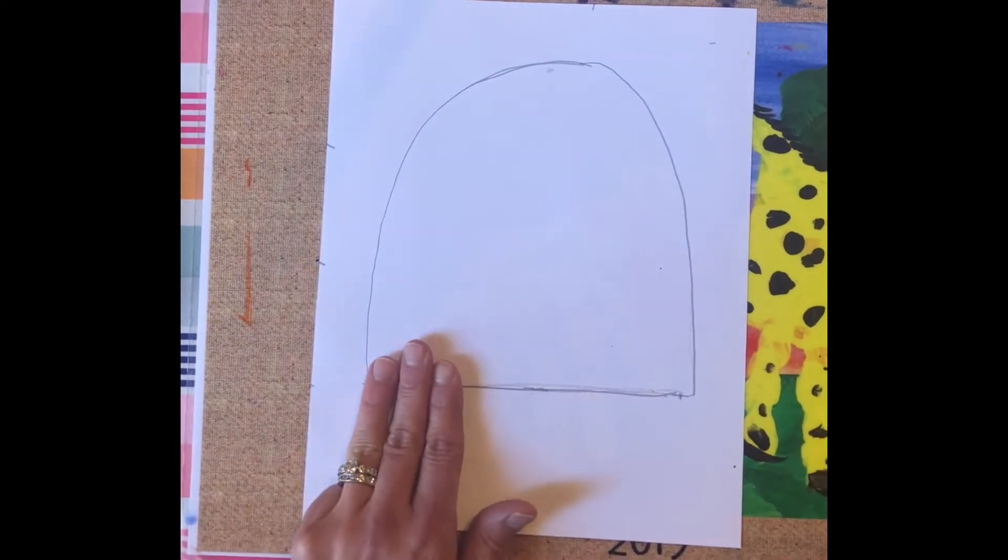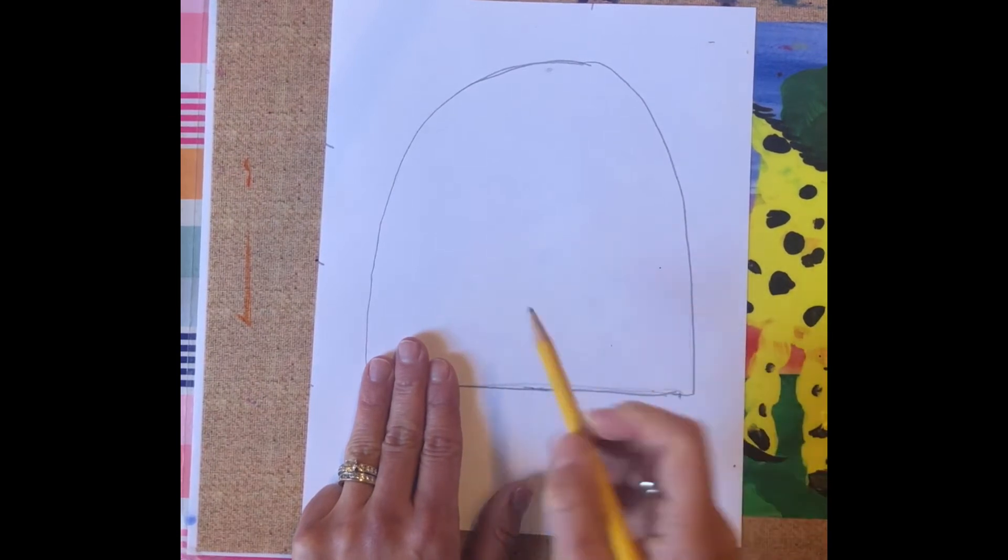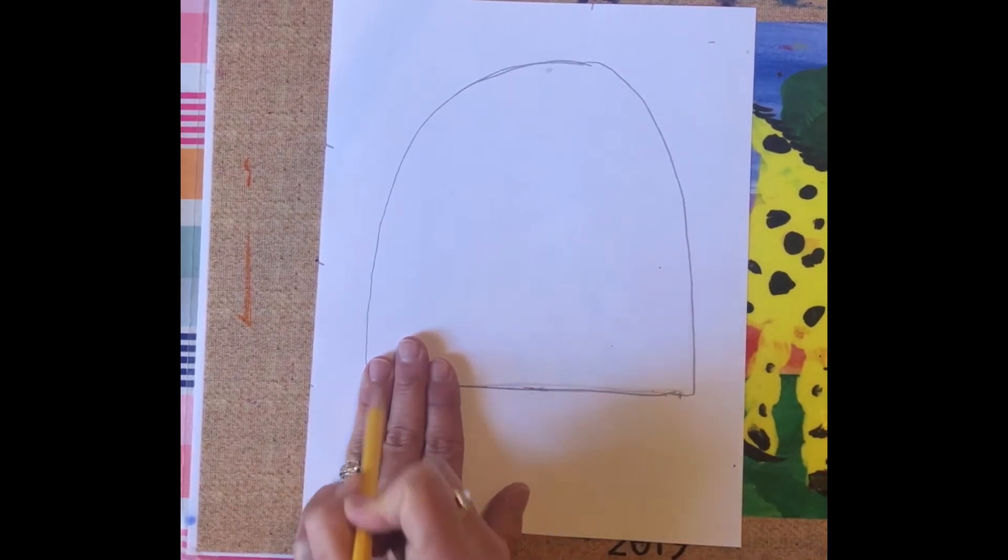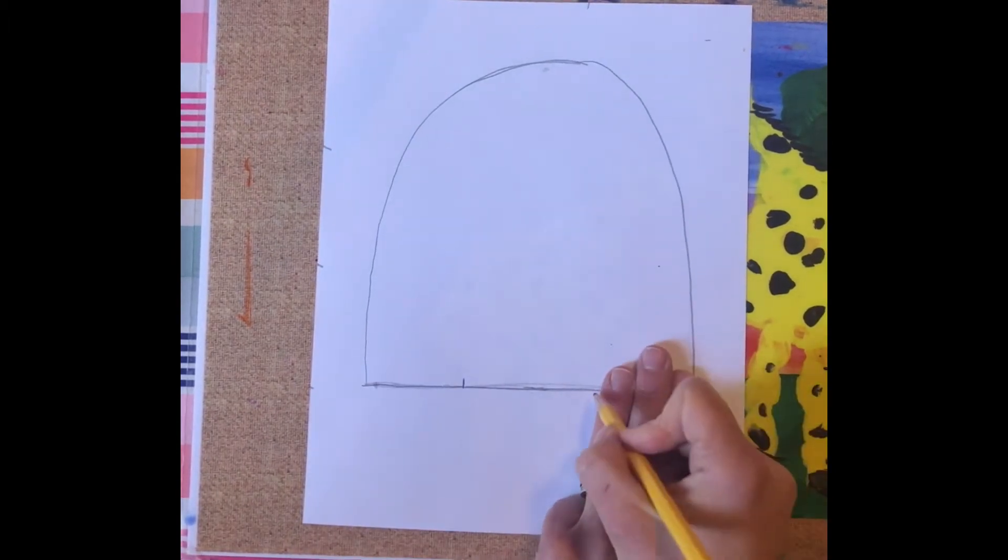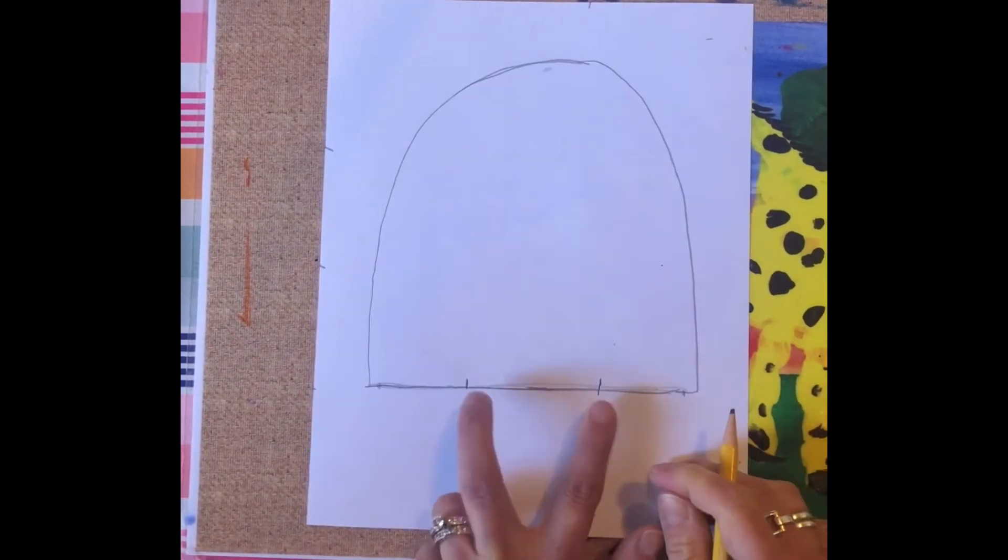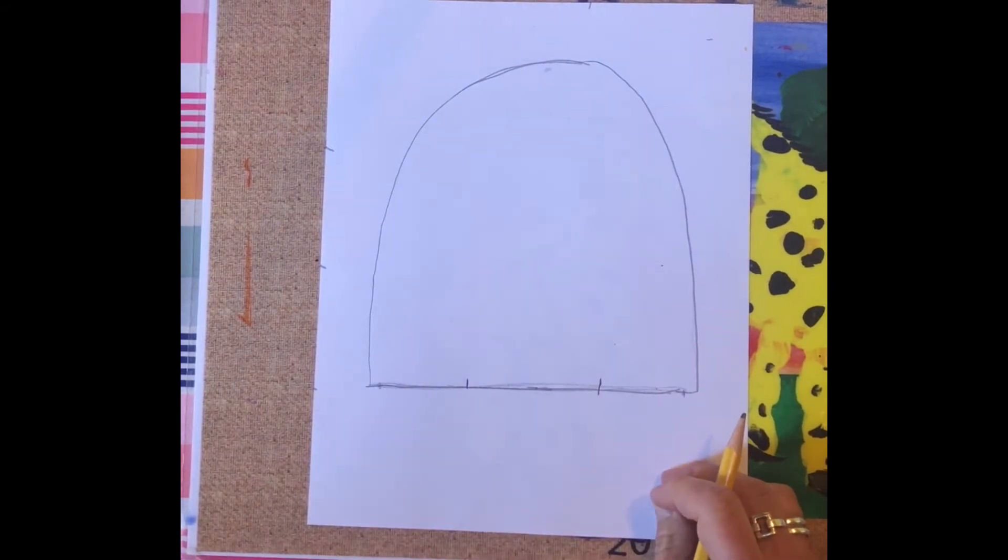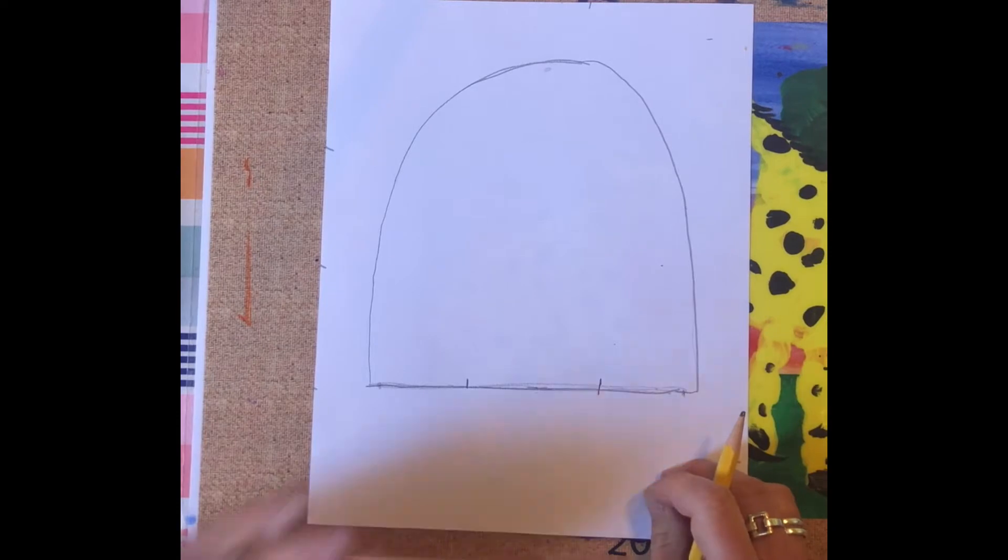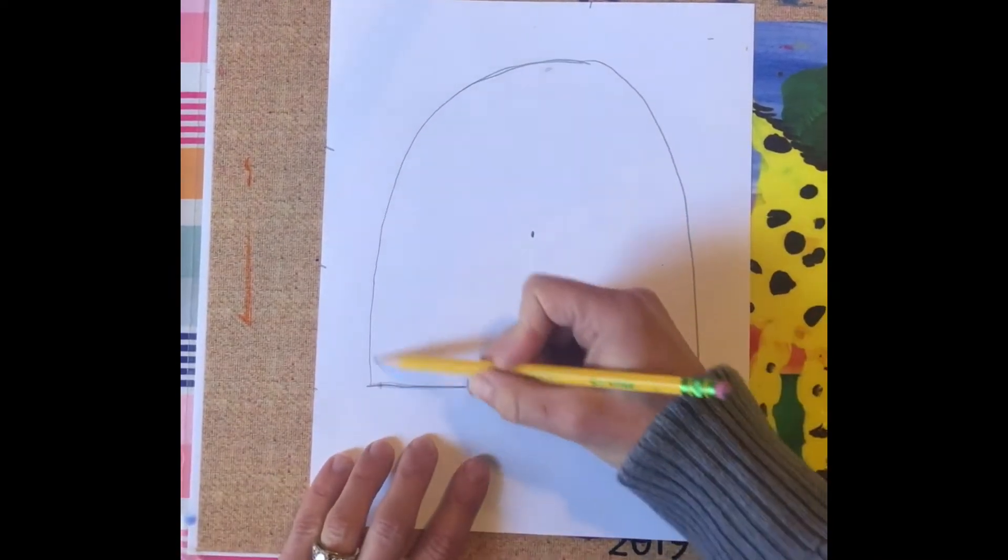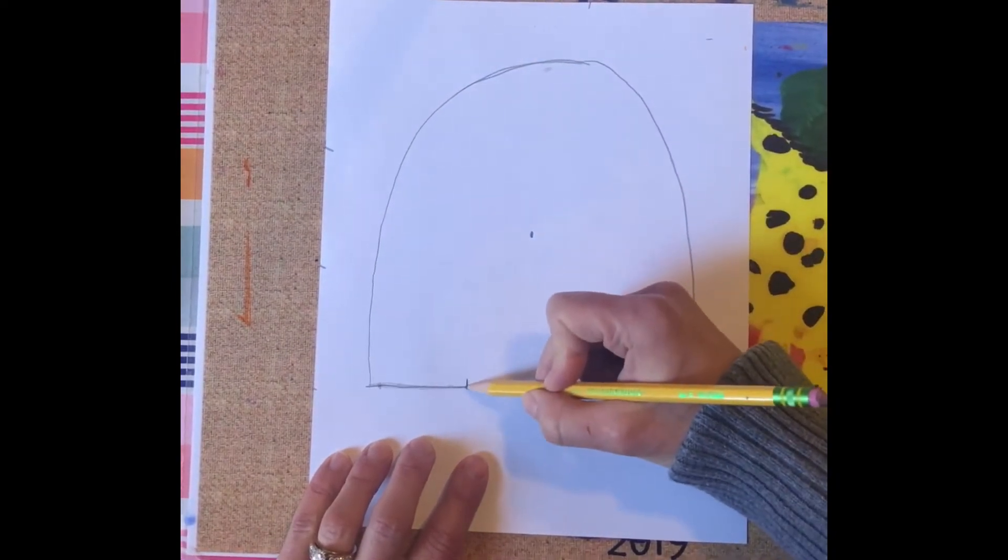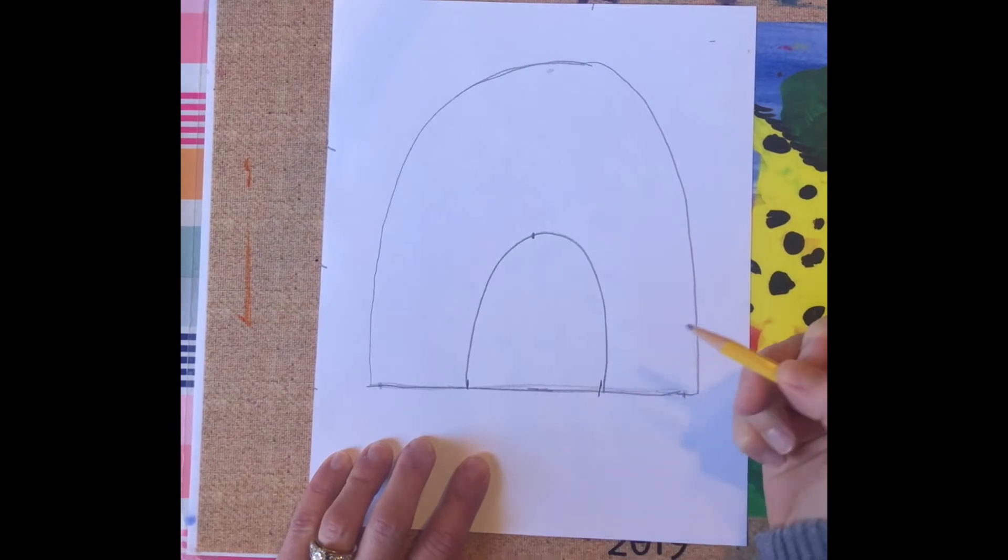Now at the bottom, so this will be my ladybug's body, at the bottom I'm gonna make the ladybug's head. Going inside the ladybug's body, three fingers make a mark, three fingers make a mark. Inside here is going to be the ladybug's head, and I'm gonna put four fingers and make a mark. And again, just like I did my rainbow arch, I'm going to do my best to make a rainbow arch for my ladybug's head.